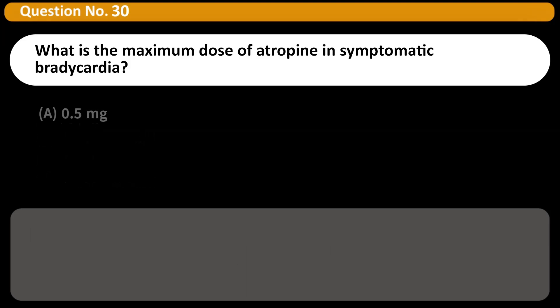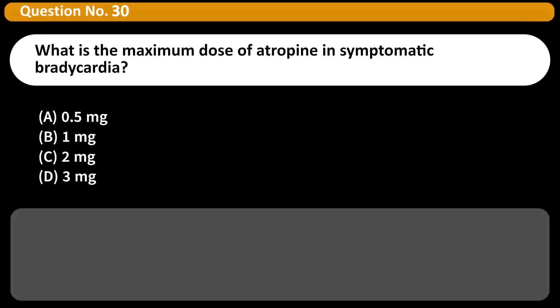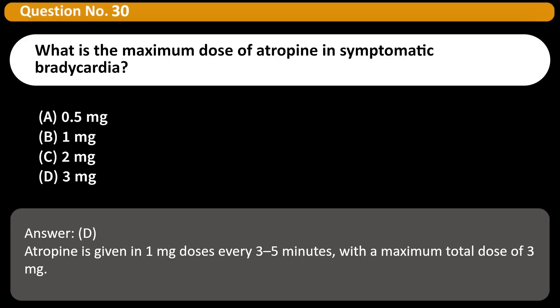What is the maximum dose of atropine in symptomatic bradycardia? A. 0.5mg. B. 1mg. C. 2mg. D. 3mg. Answer: D. Atropine is given in 1mg doses every 3-5 minutes, with a maximum total dose of 3mg.